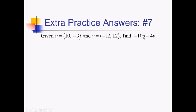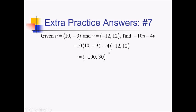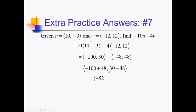For this problem, we're doing negative 10u minus 4v for these two vectors. Rewriting with component forms, we've got negative 10 times 10 comma negative 3, minus 4 times negative 12 comma 12. Next we distribute before combining: that gives negative 100 comma 30 for the first vector. For the second, we're subtracting negative 48 comma 48. You could distribute a negative 4 and put a plus, or distribute a positive 4 and keep the minus — either way, we end up with negative 100 plus 48 and 30 minus 48, which simplifies to negative 52 comma negative 18.